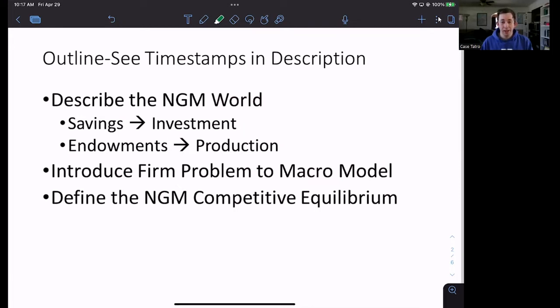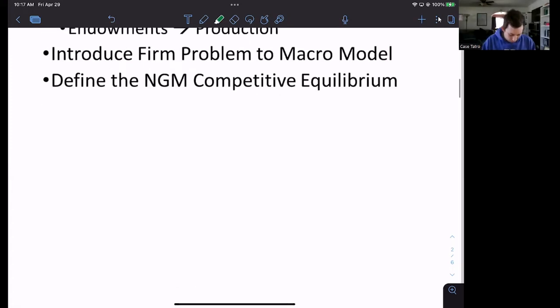What we're going to do today is basically set up that world. We'll spend some time talking about the setup of the neoclassical growth model world. We're going to talk about how savings is going to become investment. Instead of doing endowments like in previous videos, we're going to have a production function. Because we have a production function, that means we have a firm, which means we'll introduce the firm problem now. Then we'll wrap up with the definition of the competitive equilibrium in the neoclassical growth model. Timestamps are below if you would like to jump around, but let's go ahead and start talking about this new world.